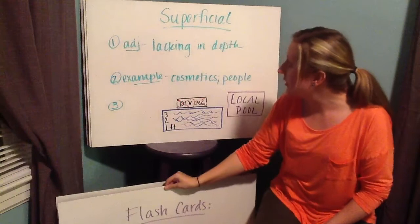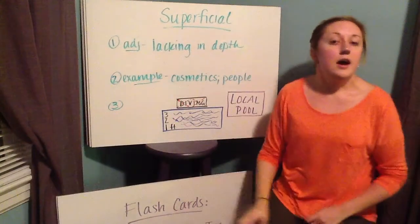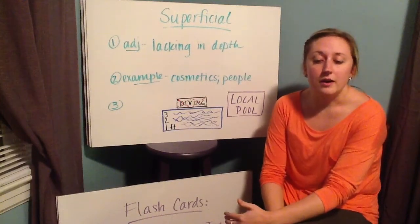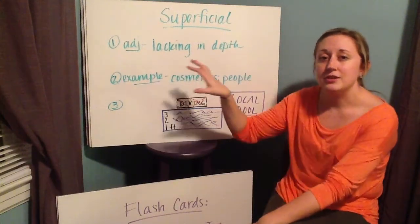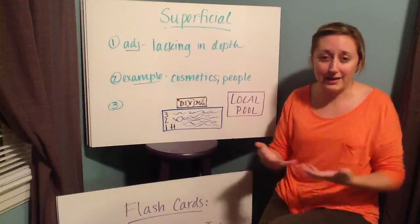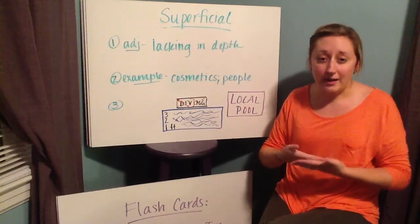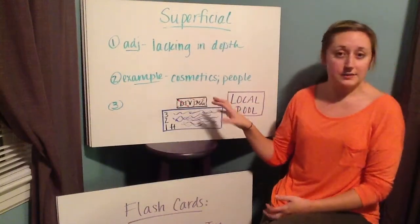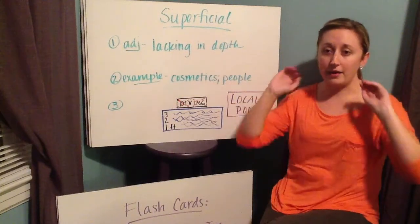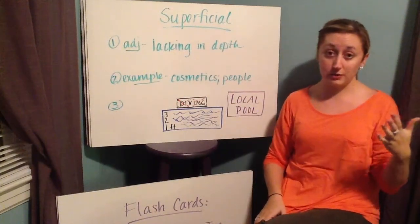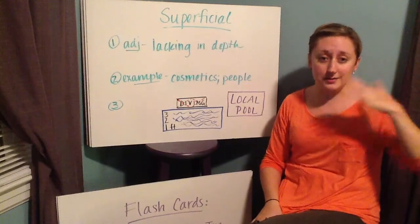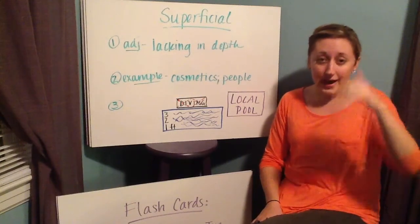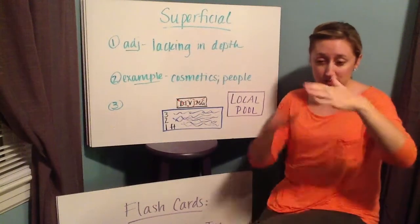Your first word this week is superficial. It's not necessarily a difficult word, but the definition is lacking in depth — something that is very shallow. An example is cosmetics. If you hear about a bad storm passing through, you'll hear that it was only cosmetic damage to the house, meaning maybe they lost a few shingles or a bit of the siding, but nothing happened to the actual house — it was all on the outside.